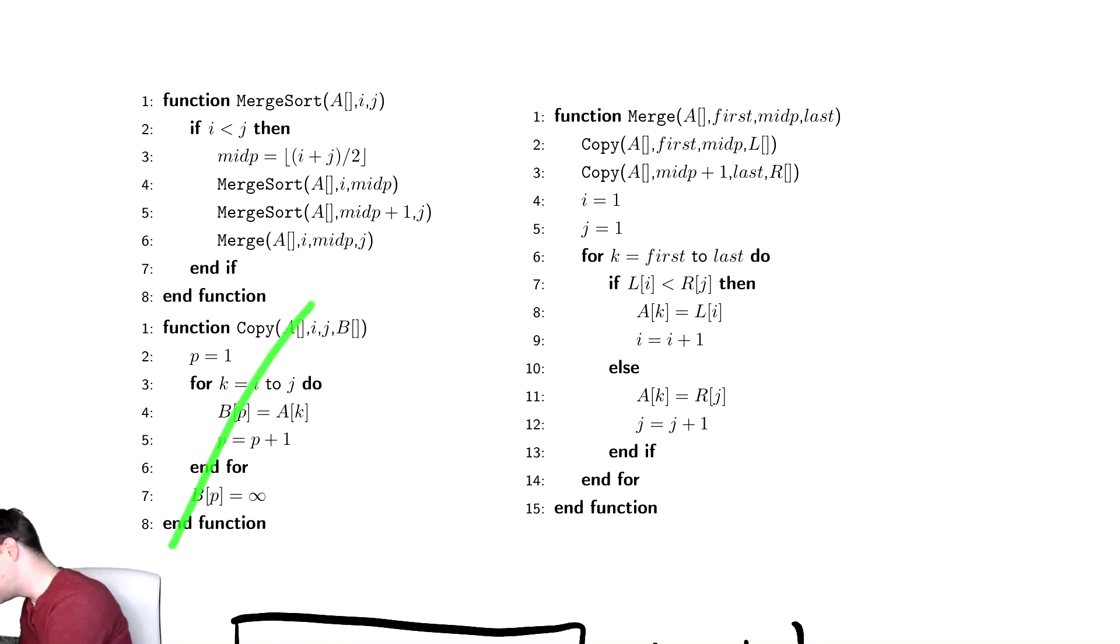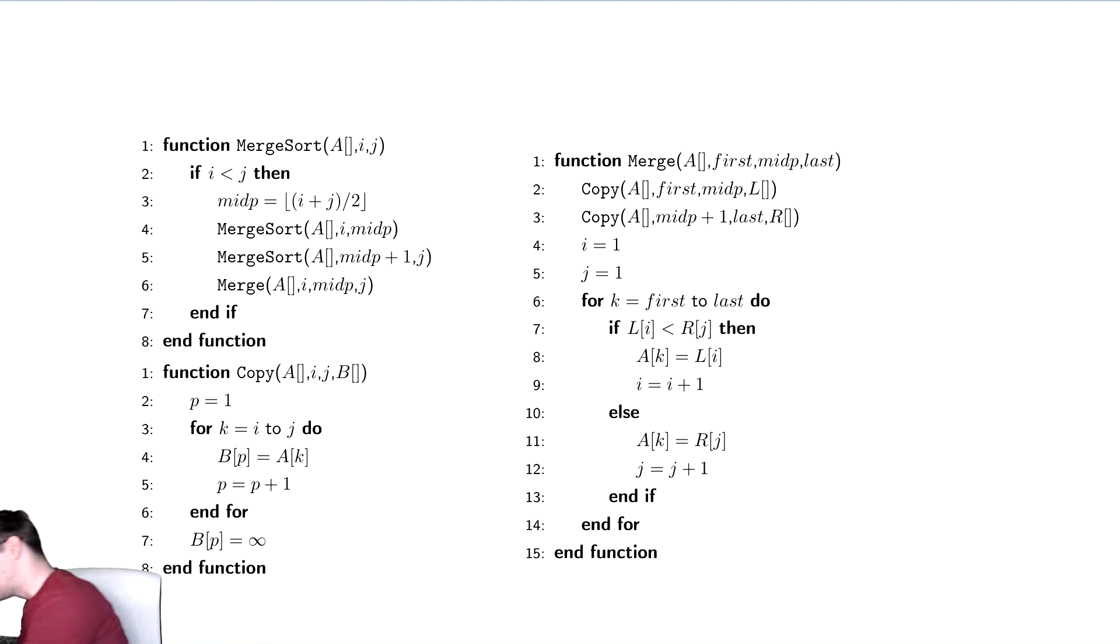We have this auxiliary function Copy which we don't need too much - it's specific to how we implement this. We then have Merge, which is where most of the heavy lifting occurs. Merge will copy all the elements from the first part of A and the second part of A, creating two copies L and R, and then run through L and R and add the correct value back to A.